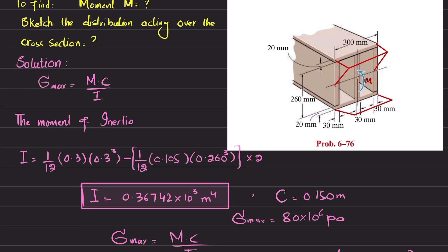The bending stress variation will be shown. Due to this moment, the beam will bend such that the upper portion is in compression and the lower portion is in tension. The bending stress is shown as compressive on top and tensile on the bottom.